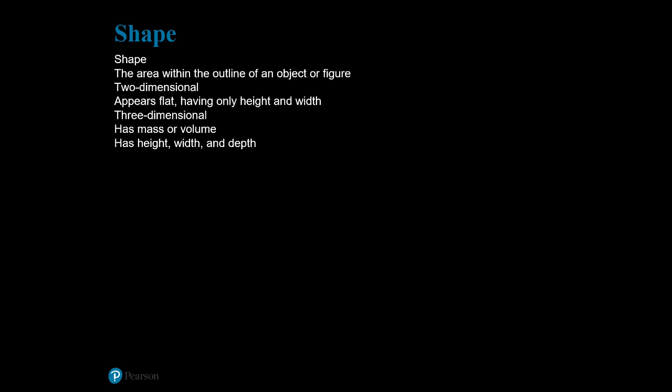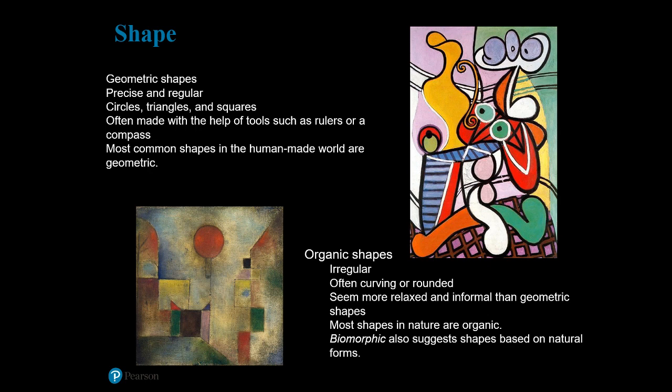A three-dimensional shape indicates the expanse within the outer boundaries of a three-dimensional object. Shapes are generally grouped into two categories: geometric or organic. Geometric shapes are circles, triangles, squares, and rectangles — the most common shapes in the human-made world, generally made with the help of instruments like a ruler or compass. You'll see lots of geometric shapes in Paul Klee's Red Balloon of 1922.